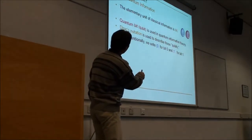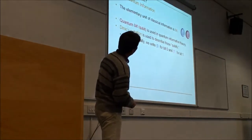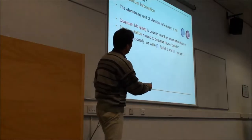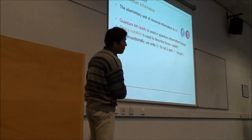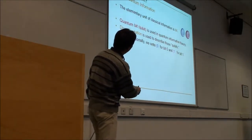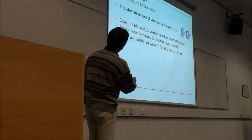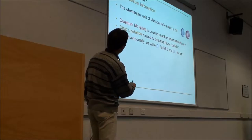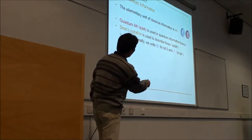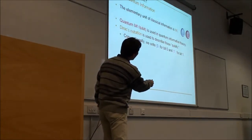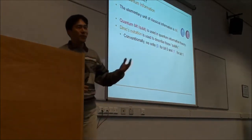Going back to classical information: the basic unit of classical information is a bit, 0 or 1. In the quantum world, we use what's called the quantum bit, or qubit in short, to represent quantum information. Traditionally, we use the Dirac notation. This bracket notation — bracket 0 — represents the classical bit 0, and bracket 1 represents classical bit 1.